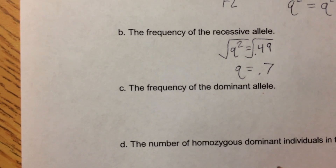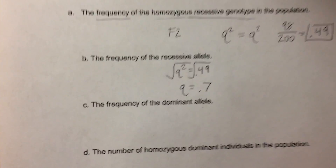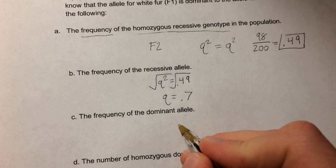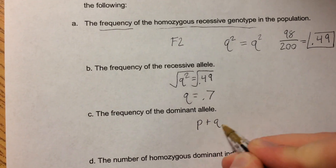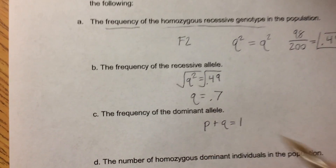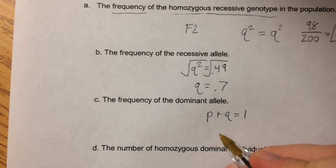C, the frequency of the dominant allele. By using the formula P plus Q equals 1, we can identify the frequency of the dominant allele.